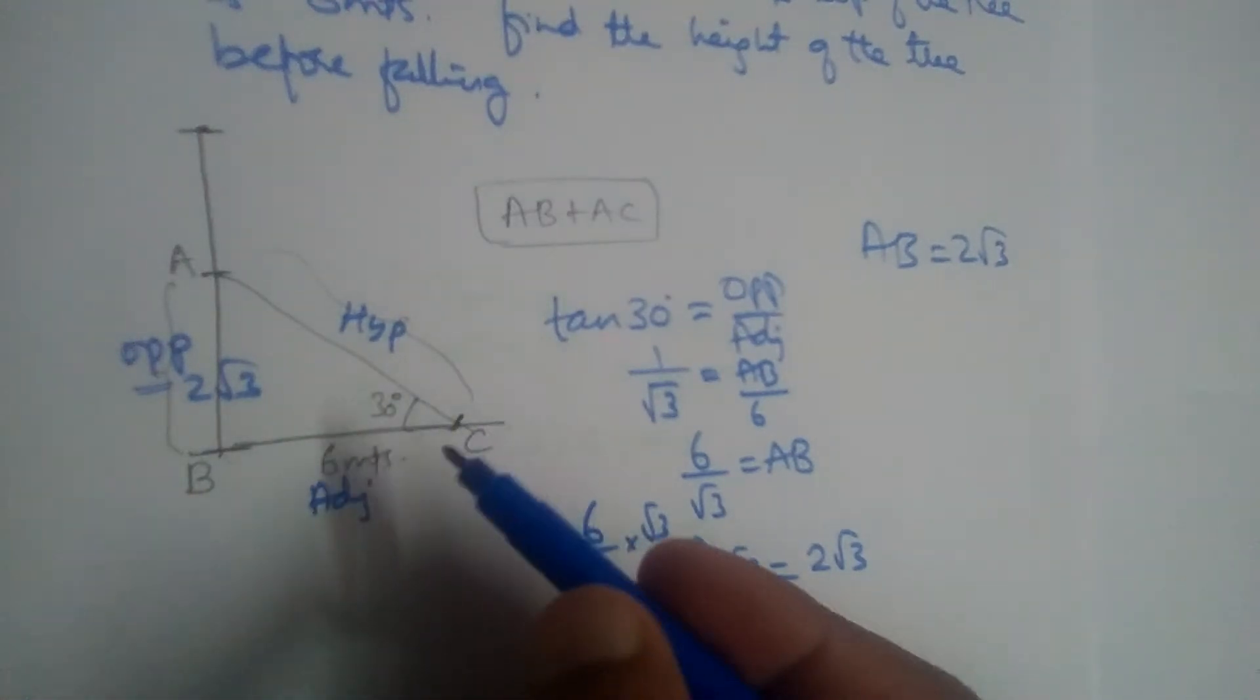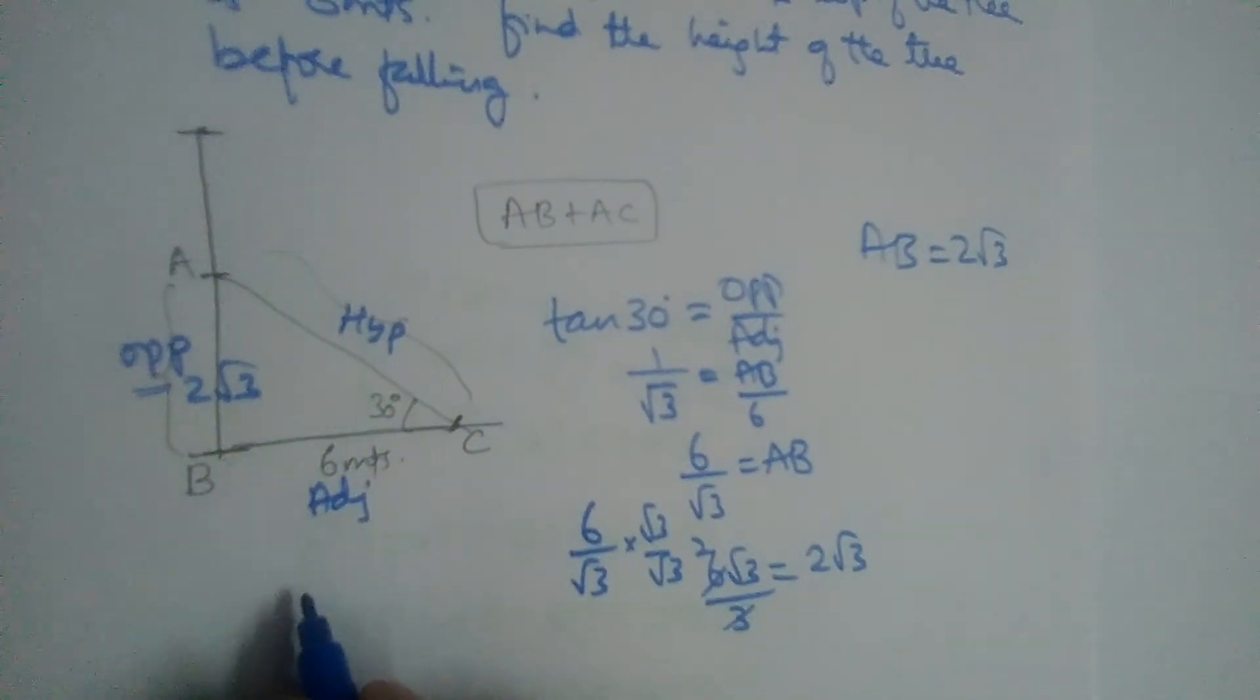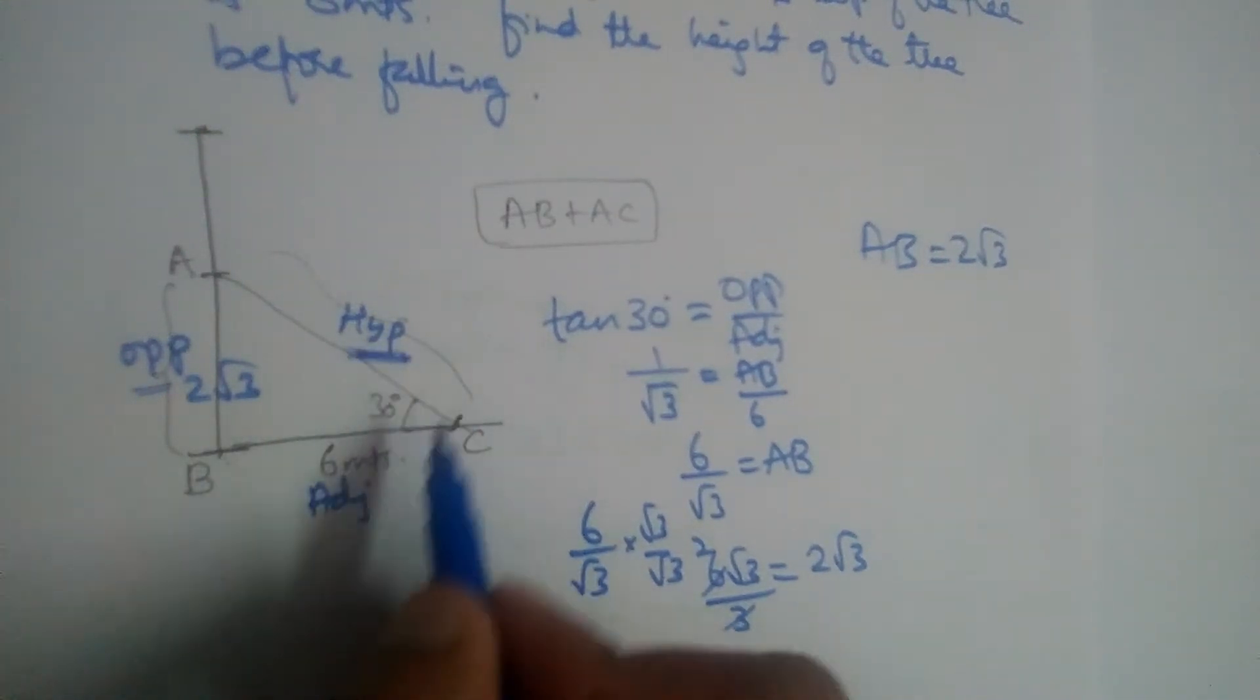Or we can use any other trigonometric ratios now like sine, cos, secant or cosecant. So let us use cos because we need hypotenuse. There is adjacent, there is opposite also.